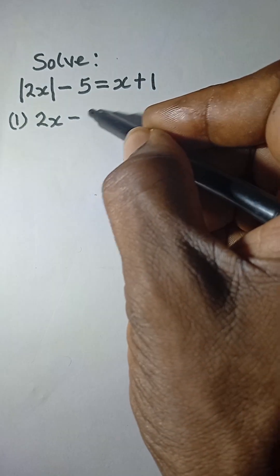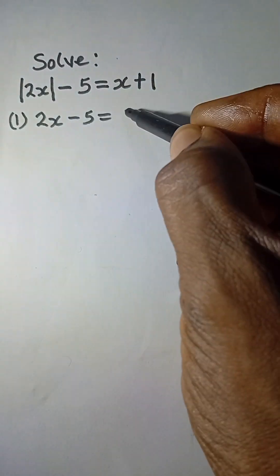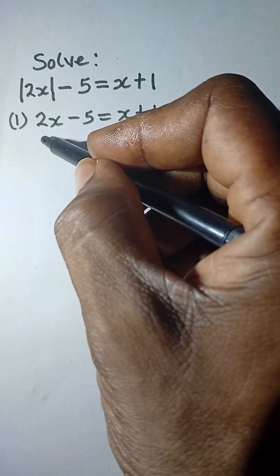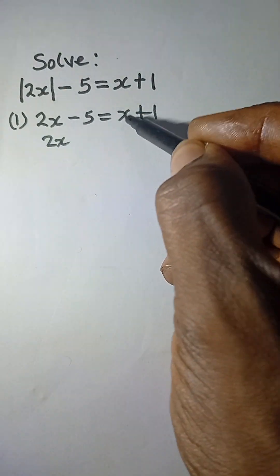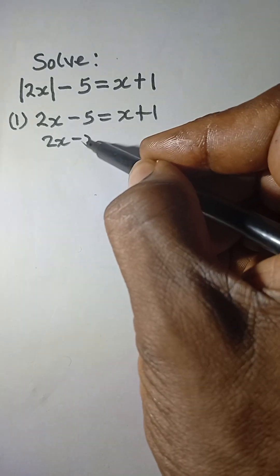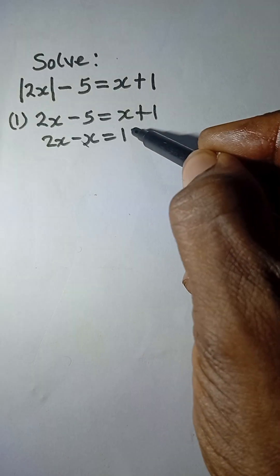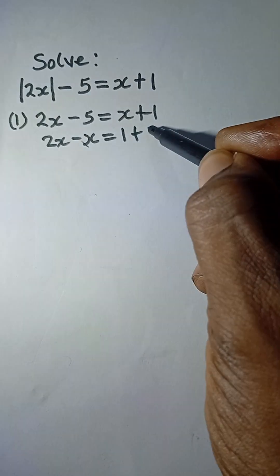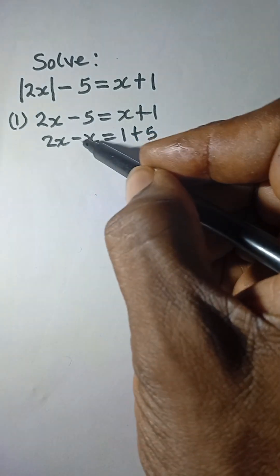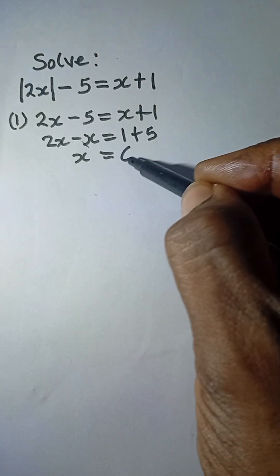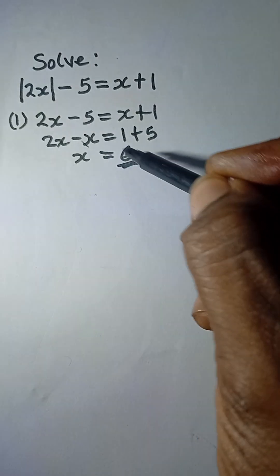and say minus 5 is equal to x plus 1. Solving this, we have 2x. When this one comes to the left it becomes minus x, is equal to 1 is here already. When this one comes to the left it becomes plus 5. So 2x minus x is x, and that is equal to 6. So this is one possible solution.